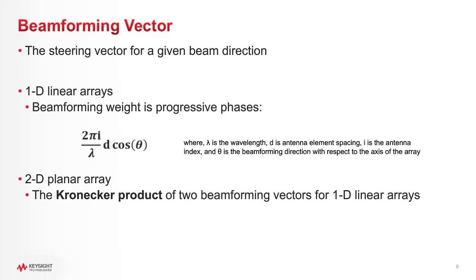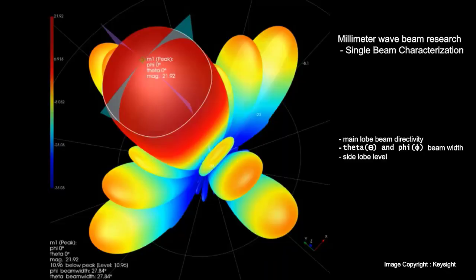For a two-dimensional planar array, you can get the vector from the Kronecker production of the two beamforming vectors calculated in a one-dimensional array. Once you apply the vector into phase shifters, you can get this type of radiation pattern in an ideal vector hardware design case without any impairments.